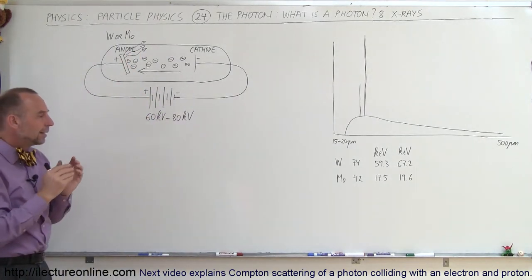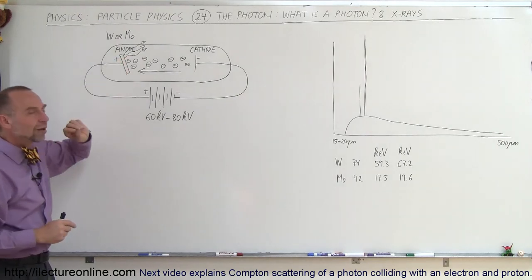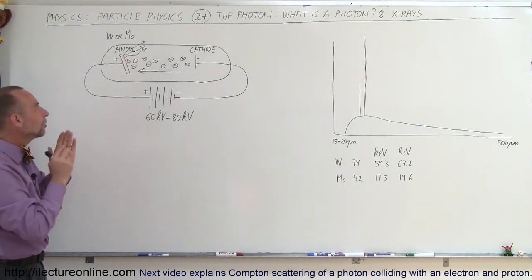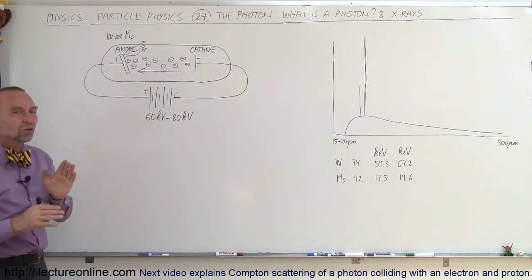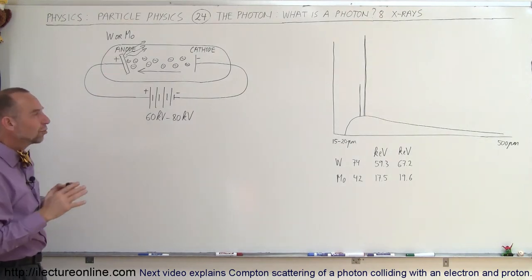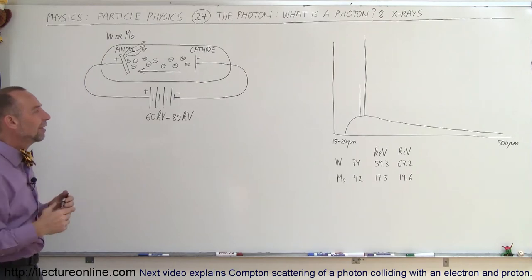Now, the frequency of the x-rays and the wavelength of the x-rays will depend upon the metal itself. So, what's going on here? Well, there's two kinds of radiation coming from this particular event.